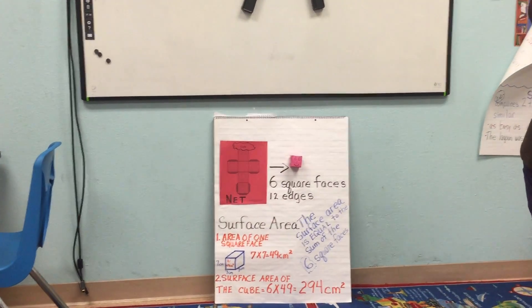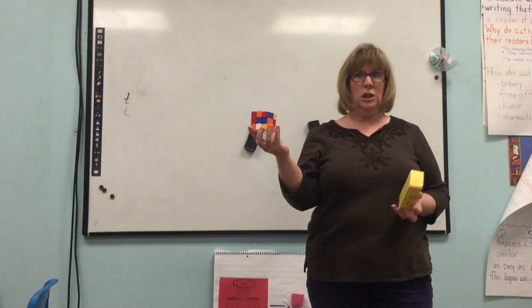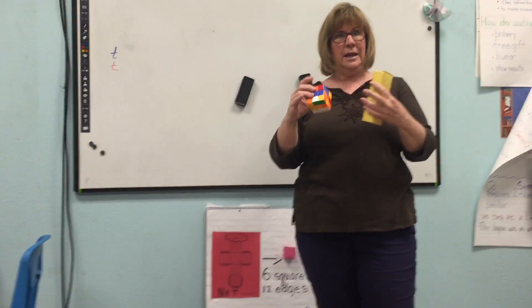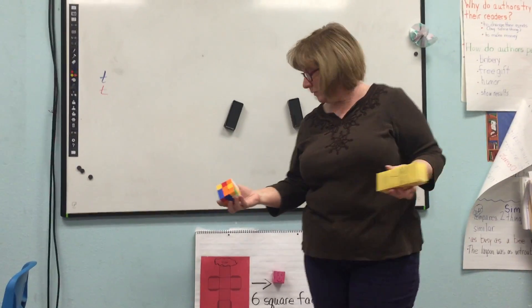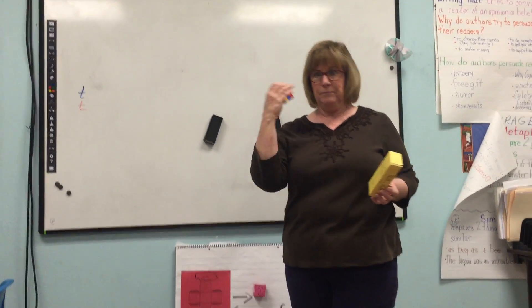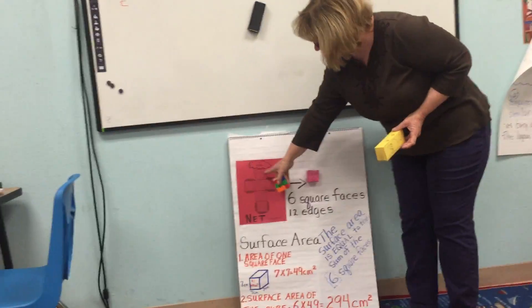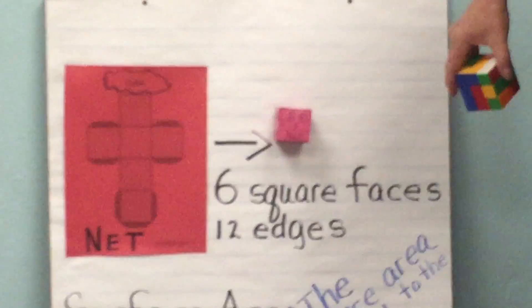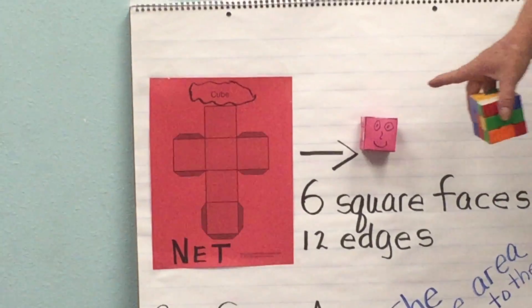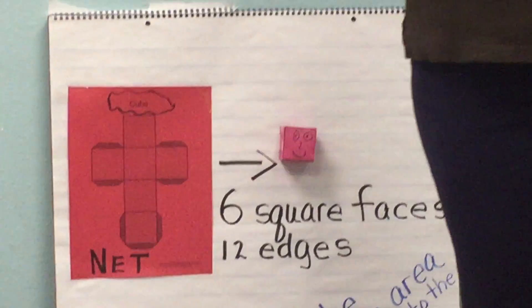So this is a cube, and if I can borrow Nathan's Rubik's cube — this is what a cube is going to look like. A cube is going to have all the same length and width. This is what it looks like before we fold it up and make one of these. Each one of these squares is going to be a face.